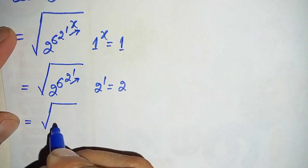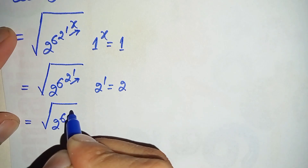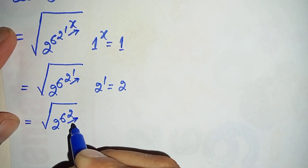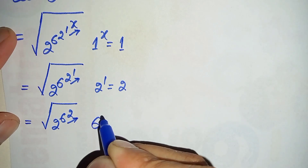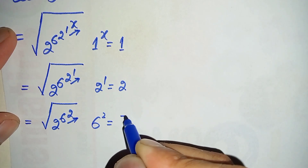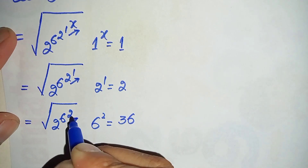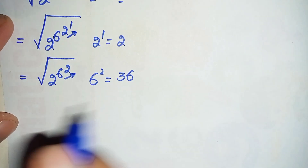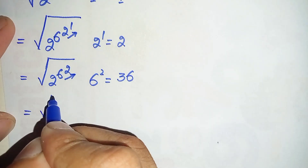This becomes the square root of 2 raised to power 6, raised to power 2. Now we will solve 6 raised to power 2. What is the value of 6 raised to power 2? 6 times 6 is 36. So in the next step we replace 6 raised to power 2 with 36.